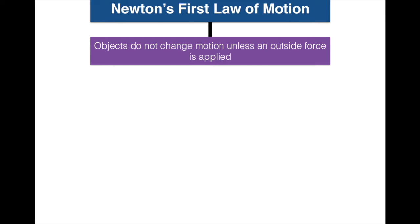Let's create our graphic organizer. Objects don't change their motion unless an outside force is applied. An object at rest will stay at rest, and an object in motion will stay in motion unless acted upon by an unbalanced force. We'll talk more about what an unbalanced force is in our next lesson on Newton's second law — spoiler alert: force equals mass times acceleration.